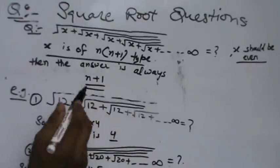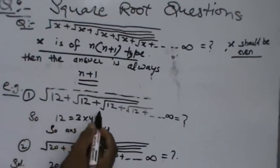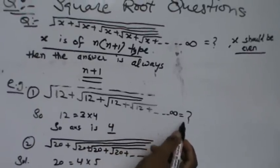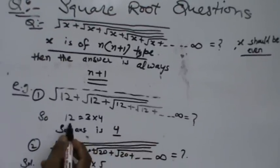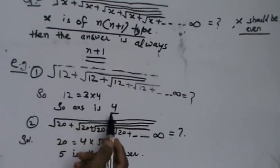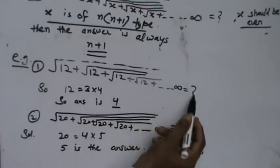The answer is always the maximum quantity. Suppose you are given a question like square root of 12 plus square root of 12 plus square root of 12 up to infinity. Then what would its answer be? The answer is 12 equals 3 into 4. The maximum quantity is 4, so the answer is 4. This means square root of 12 plus square root of 12 up to infinity equals 4.